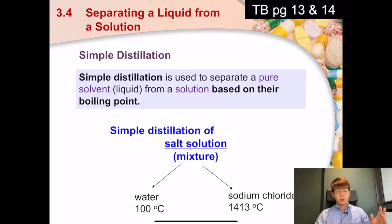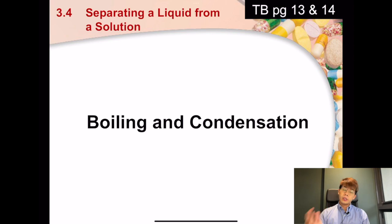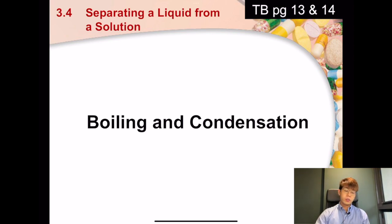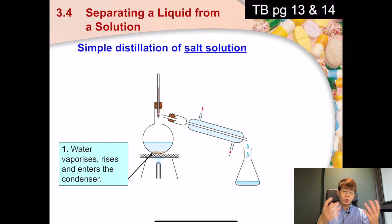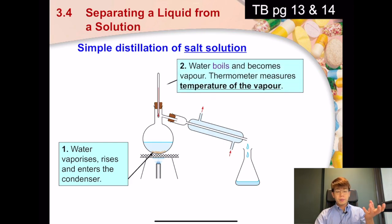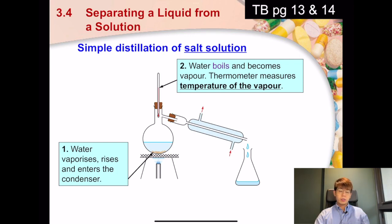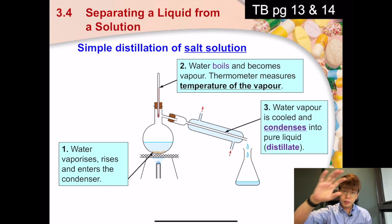Sodium chloride has a boiling point of 1413°C and water has a boiling point of 100°C. Because of this difference, we can use distillation to separate them. Distillation is simply a process of boiling and condensation. Inside the distillation flask, the water boils and becomes water vapor, which rises up. The thermometer measures the temperature of the vapor.